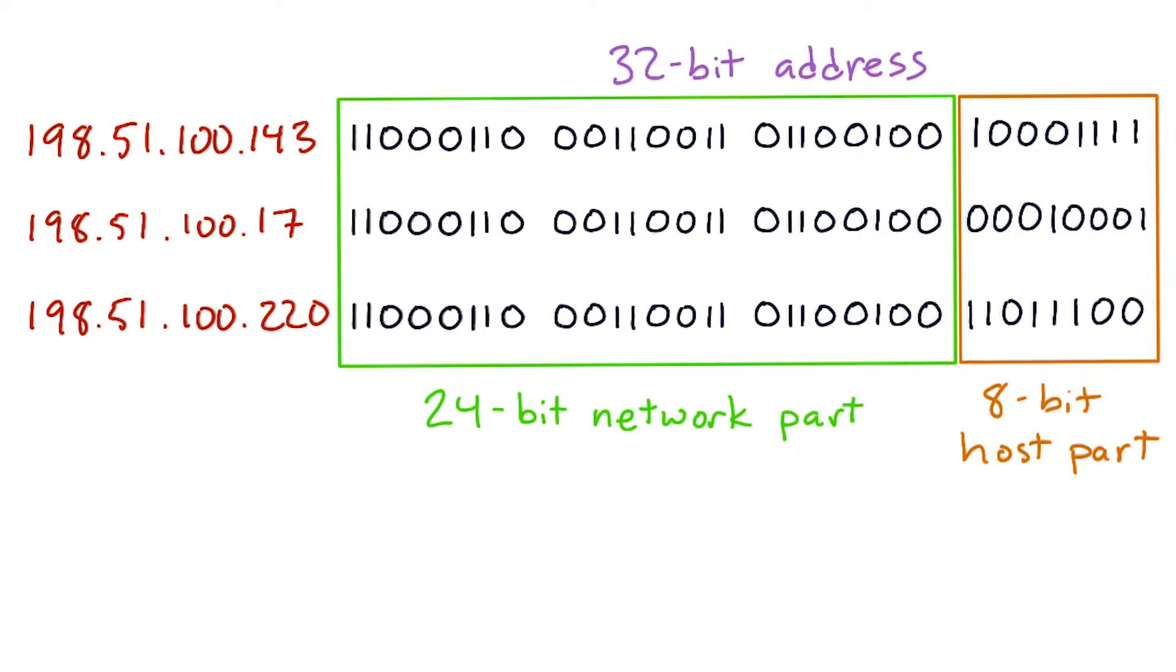The network prefix length is something that has to be chosen when the network is set up, and it's usually configured by whatever process assigns addresses to the computers. For instance, if you have a network with a 24-bit prefix, that means there's 8 bits left over for the host part of addresses. We would conventionally write this as slash 24. For instance, 198.51.100.0 slash 24 network block.